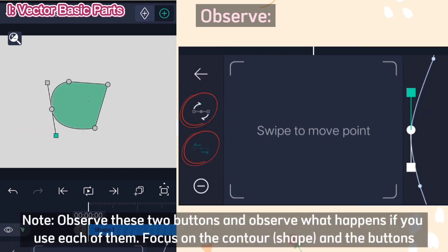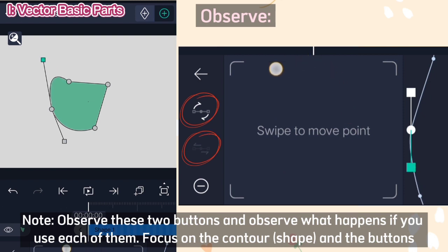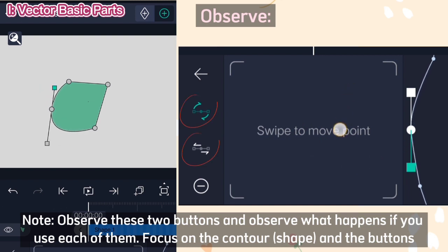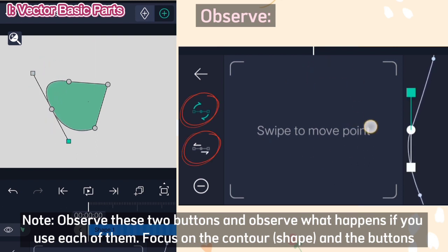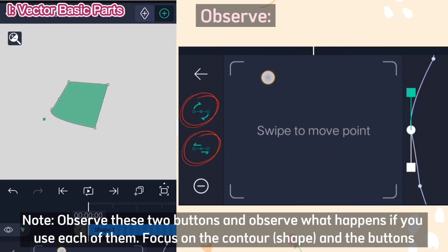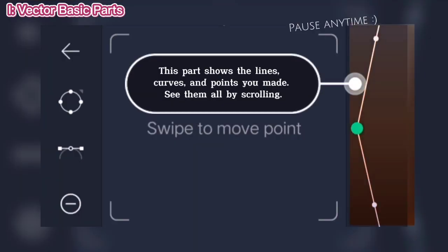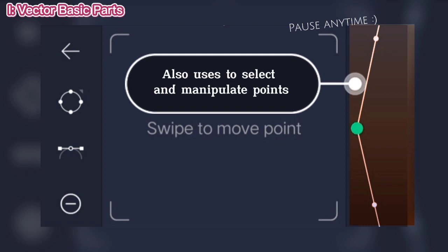Observe these two buttons and observe what happens if you use each of them. Focus on the contour shape and the buttons. This part shows the lines, curves, and points you made. It also uses to select and manipulate points.